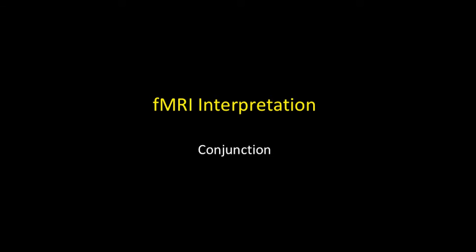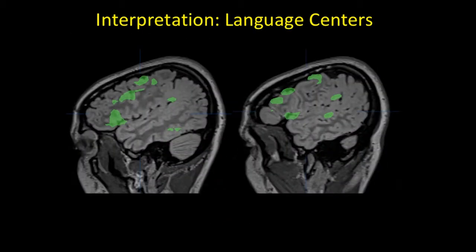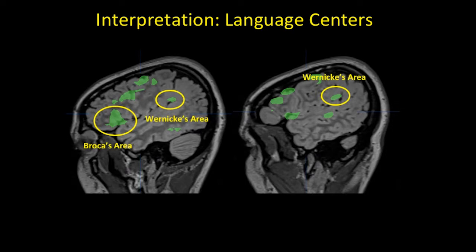The interpretation is pretty straightforward in this case — we have left language lateralization. A good hint: about 80 to 85% of the time, the language part of the SMA or pre-SMA is on the same side as the language dominant hemisphere, and here it's circled on the left. We can see pretty confidently our language centers — Broca's area and Wernicke's area in the cortical dysplasia — so we want to stay away from that in our report. We also see a well-defined posterior superior temporal sulcus association language center.